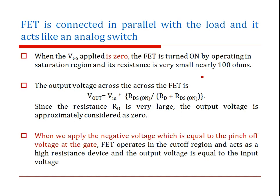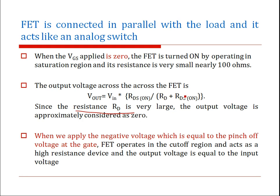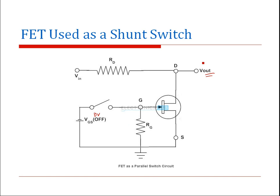The output voltage across the FET is V_out = V_in × (R_DS(on)) / (R_D + R_DS(on)). Since R_D is very large compared to R_DS(on), the output voltage approximates to zero. This operation of the FET in the on state causes the output to be close to zero.